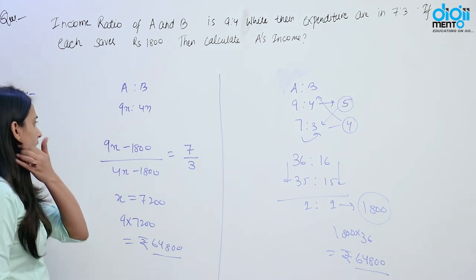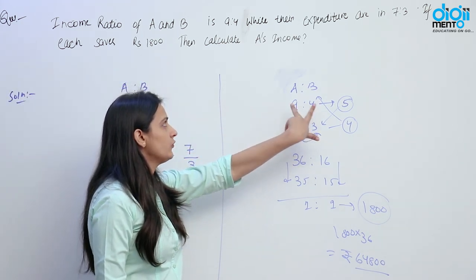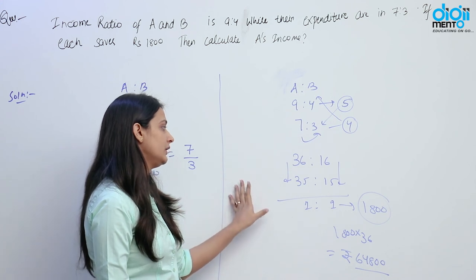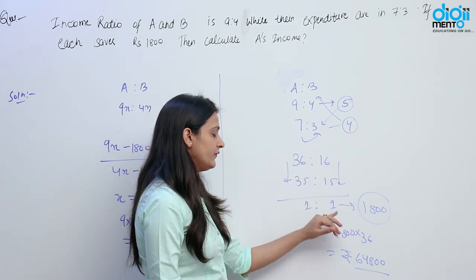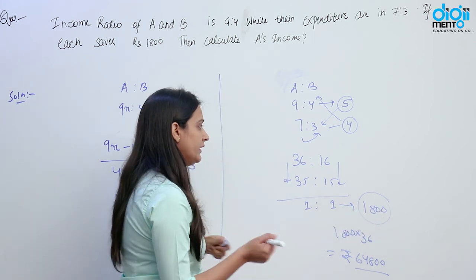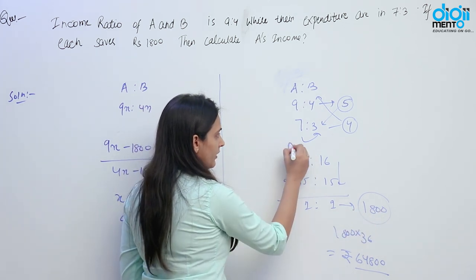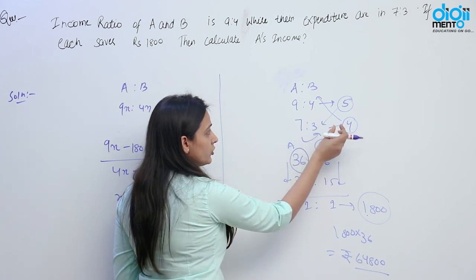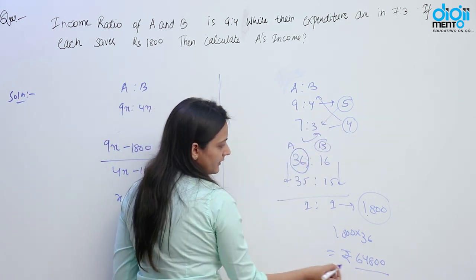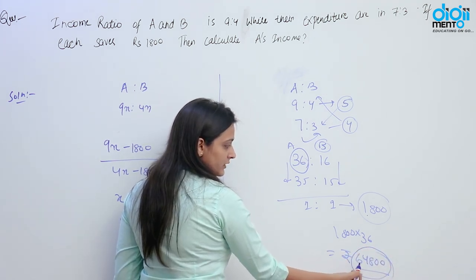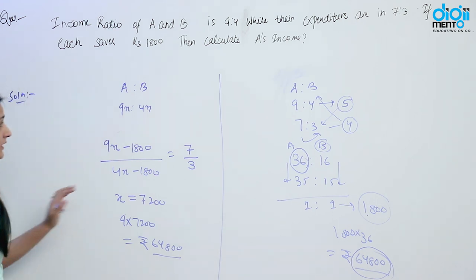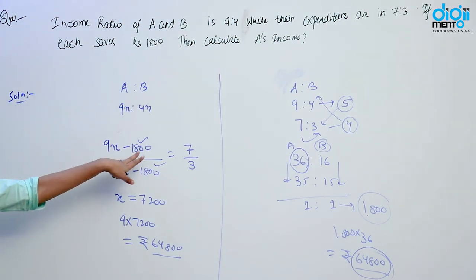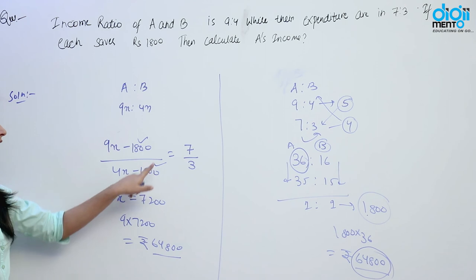Humne kya kiya — A aur B ka income ratio 9 ratio 4 hai aur unka expenditure ratio 7 ratio 3 hai. Humne dono ratios ka difference liya aur difference ko lower aur upper ratio se cross multiply kar diya, phir humne unka difference liya — yah difference 1800 ko show karta hai jo unki saving hai. Ab humein A ki income nikalni hai toh is 1800 ko 36 se multiply karenge to A ki income 64800 rupees aa jaayegi. Yeh tricky approach tabhi lagaa sakte hain jab dono ki saving equal ho — agar saving equal nahi hai, jaise A ki 1800 aur B ki 1200 ho, tab hum is approach ko apply nahi kar sakte.